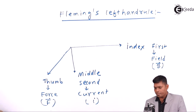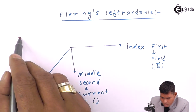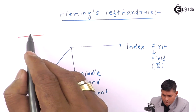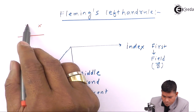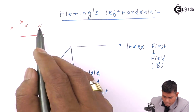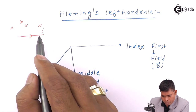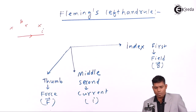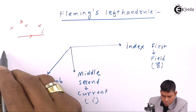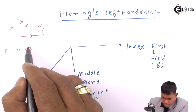If I apply this rule to a conductor, suppose the magnetic field is into the page, and the current is from left to right — then in what direction will the force act? We know that the force formula is F = IL cross B.